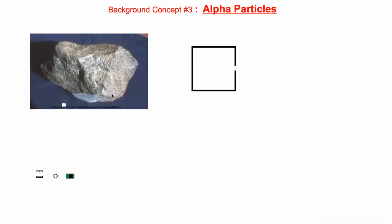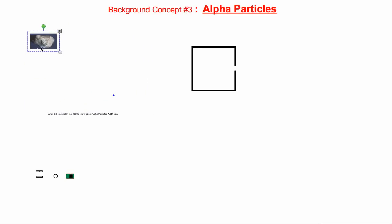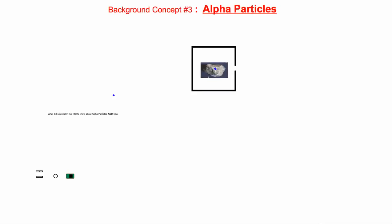Scientists didn't really have any idea what alpha particles were — they just called them that as a name for something they knew was being given off. But they quickly found alpha particles had some interesting uses. They could take the rock that gave off alpha particles, put it in a box with a small opening, and get whatever alpha particles came out of the box to shoot out in a straight line — sort of like making an alpha particle gun, in the sense that they could get these things to shoot out.